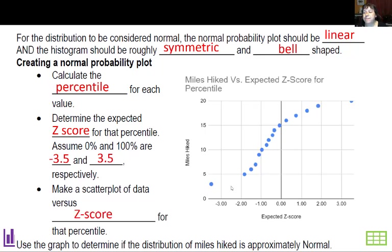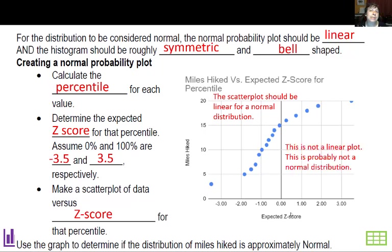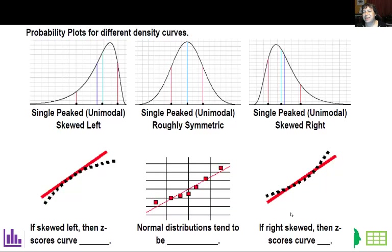Then make a scatter plot of the data values versus the z-scores. Here are the values and here are the expected z-scores. You graph them to determine if the distribution of miles hiked is approximately normal. It should be linear for a normal distribution, but this one clearly has some curve to it — so it's not a linear plot. My hikes are not normally distributed, because I have some really low values for days when I was taking it easy and going short distances. For curves skewed left, the probability plot tends to curve down. When symmetric and bell-shaped, it should be roughly linear — it doesn't have to be perfect.